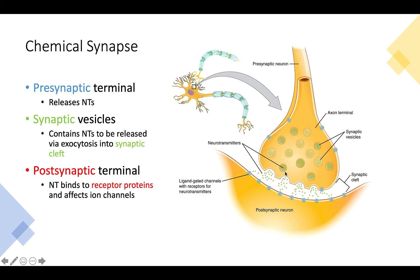Neurotransmitters are chemicals that elicit effects on the receptors they bind to — think of them as ligands. They are released via exocytosis into the synaptic cleft. The neurotransmitters then bind to receptor proteins on the membrane of the postsynaptic neuron, eliciting a change in those proteins and allowing ions such as chloride, sodium, potassium, or calcium to pass through.